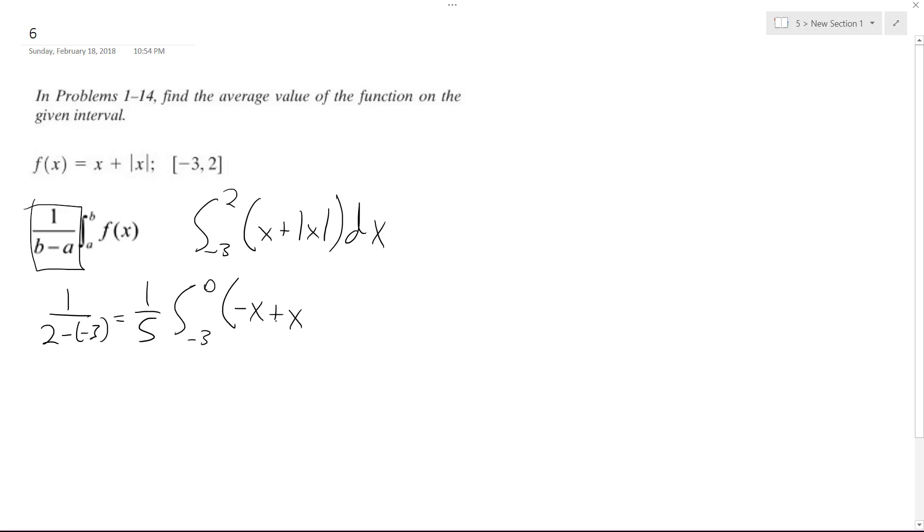Because what happens here is this accounts for the fact that this pretty much cancels itself out in a way. It's going to have a slope of like 2x and then 0 over here. So plus, this is dx, and then plus 0 to 2, and then 2x dx, because it's just a slope of 2.